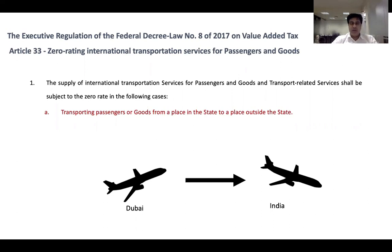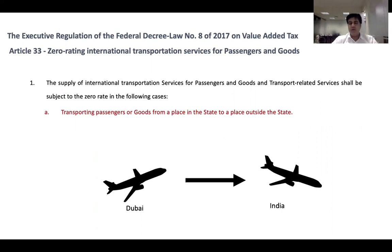I picked up Article 33 from the Executive Regulation, which very clearly says which services — where the transport of passengers and goods — will be applied as zero rated. The first point: transporting passengers or goods from a place in the state to a place outside the state. A flight from Dubai to India — the state refers to UAE — to outside the state means anywhere outside UAE. It is considered zero rated because it's part of international transportation.